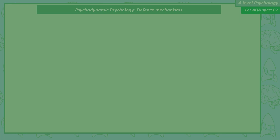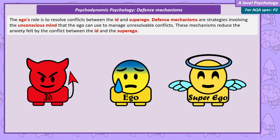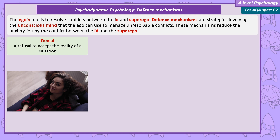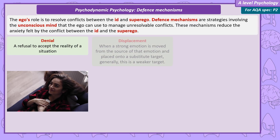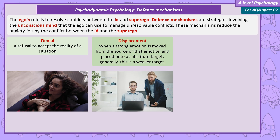Defence mechanisms. The ego's role is to resolve conflicts between the id and the superego. Defence mechanisms are strategies involving the unconscious mind that the ego uses to manage unresolvable conflicts, reducing the anxiety felt by these conflicts. There are a wide range of defence mechanisms, but here we'll describe three: denial, displacement and repression. Denial is when the individual refuses to accept the reality of their situation — for example, a girlfriend refusing to accept a relationship is over and still sending romantic texts to her ex. Displacement is when a strong emotion is moved from its source and placed onto a substitute, generally weaker, target.